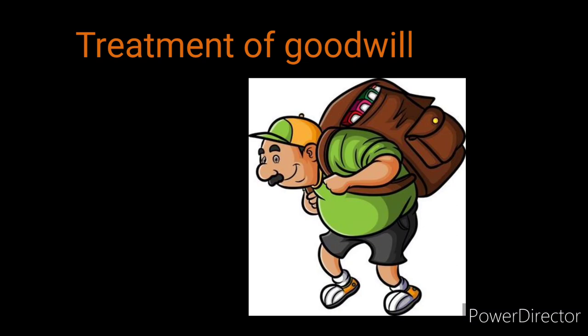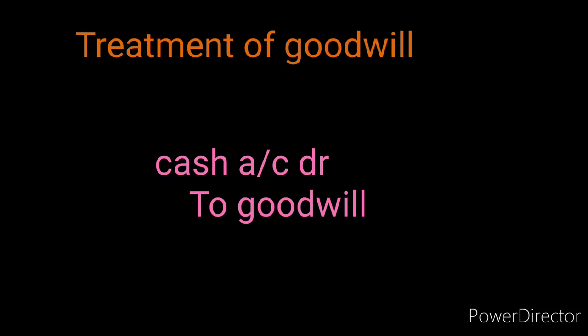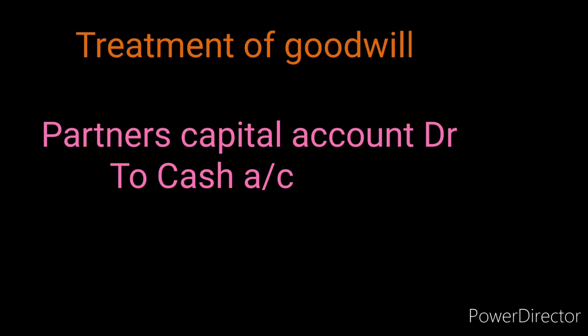Treatment of goodwill: when the new partner brings goodwill amount as premium apart from his capital, that goodwill amount will be given to the existing partners who sacrificed, in the ratio of sacrifice. If he is settling privately, no journal entry is needed. Otherwise, cash or goodwill is debited and partners' capital accounts are credited when sharing goodwill to partners. When existing partners withdraw the goodwill immediately, partners' capital account is debited and cash or bank account is credited. Sometimes partners may decide to withdraw only 50% of the goodwill.